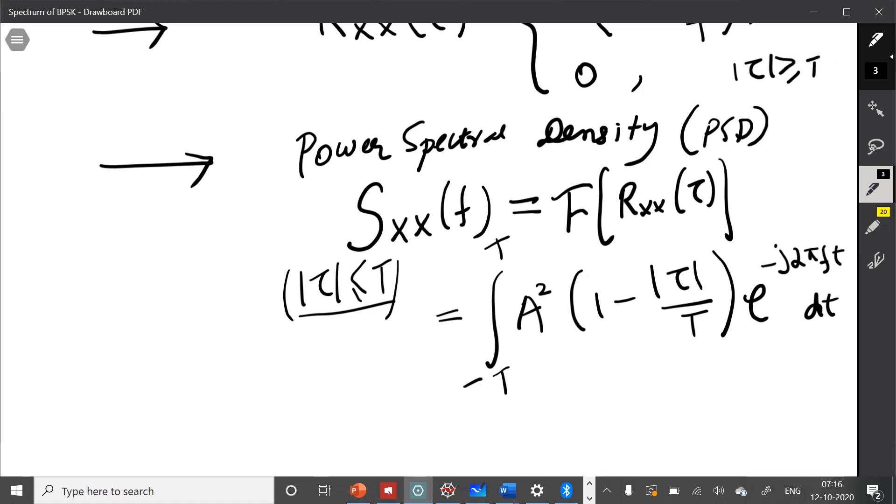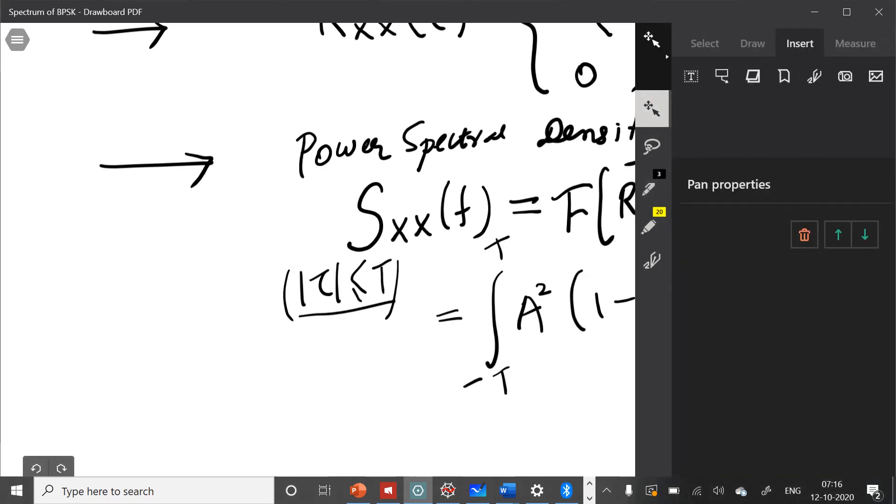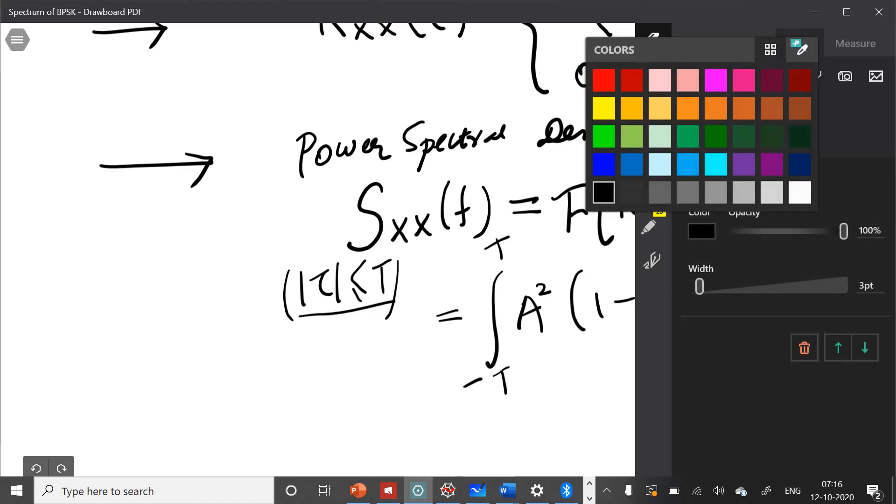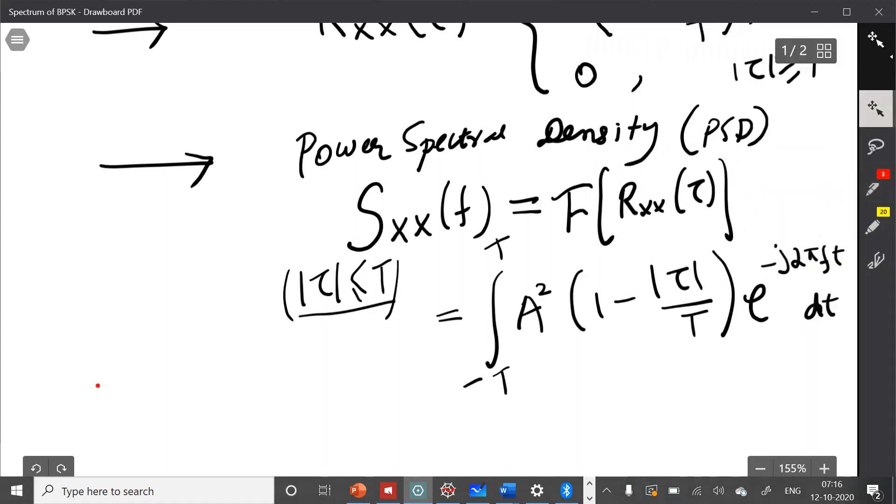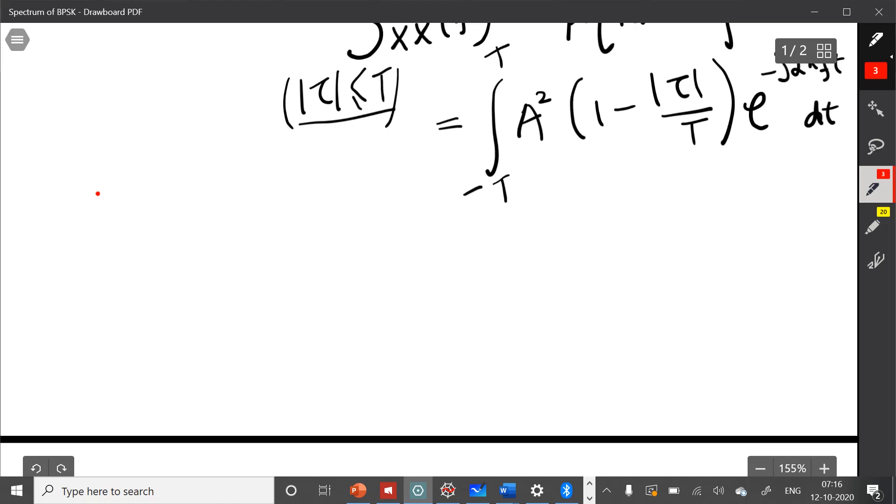You can compute it. In fact, if you plot the autocorrelation function of this random binary wave, you will get something like a triangular wave. Let me plot it here. This is your R_xx of tau. This is minus T, and this is T.